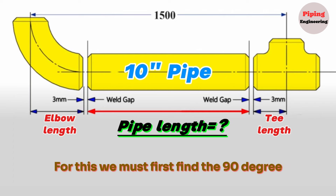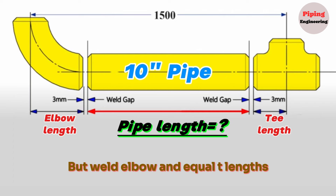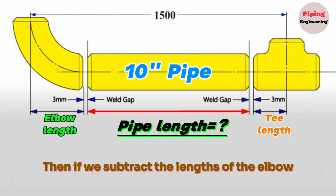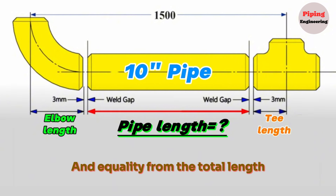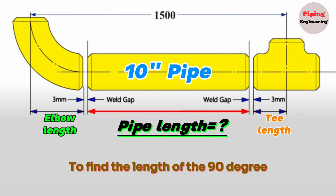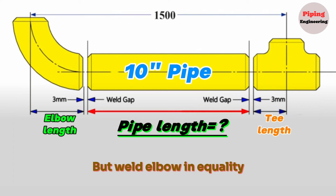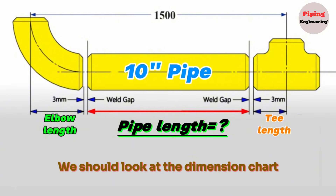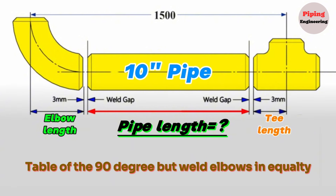For this, we must first find the 90-degree butt weld elbow and equal T lengths. Then, if we subtract the lengths of the elbow and equal T from the total length, we can find the length of the 10-inch pipe piece. To find these lengths, we should look at the dimension chart table of the 90-degree butt weld elbow and equal T.